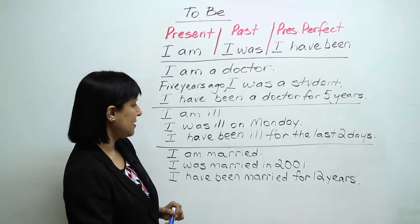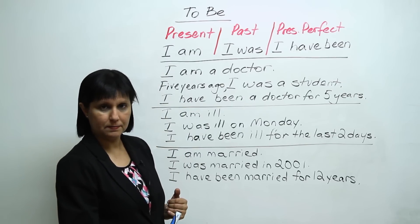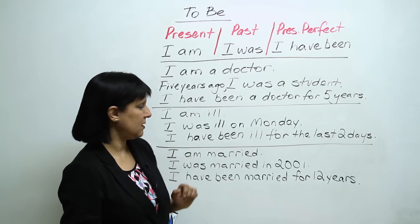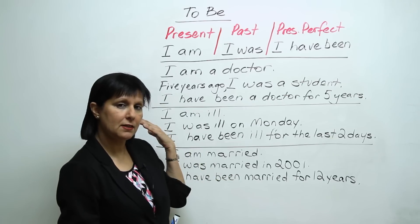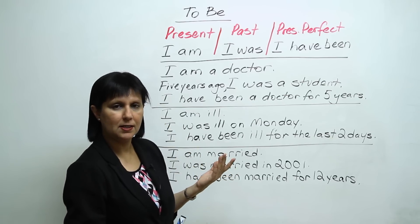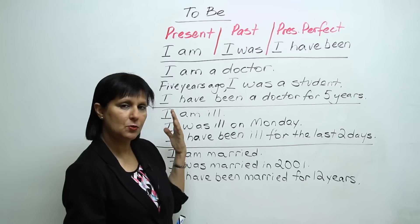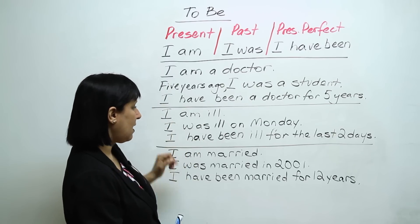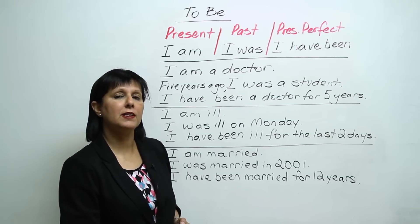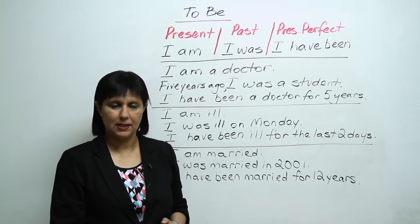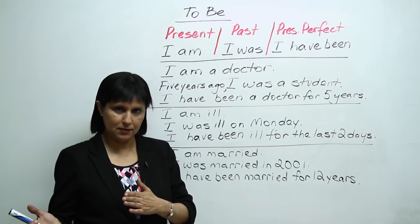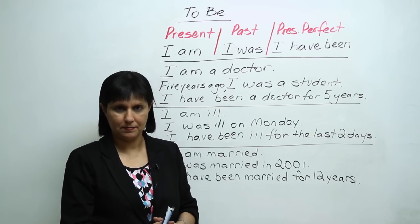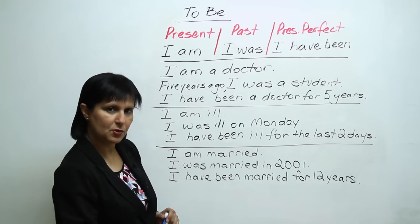Another example: 'I am ill' means I am ill now, in the present. 'I was ill on Monday' — let's say today is Wednesday — that's clearly in the past. Or, 'I have been ill for the last two days' — present perfect — means I was ill and I am still ill now.